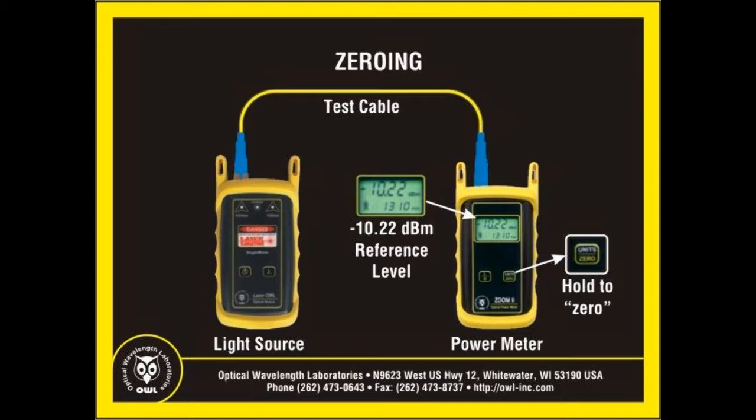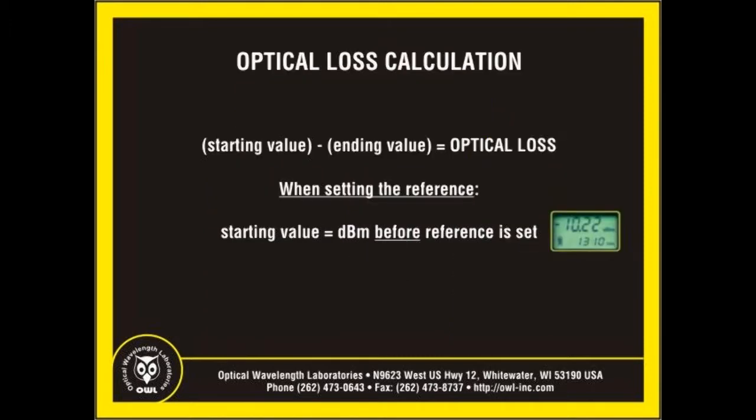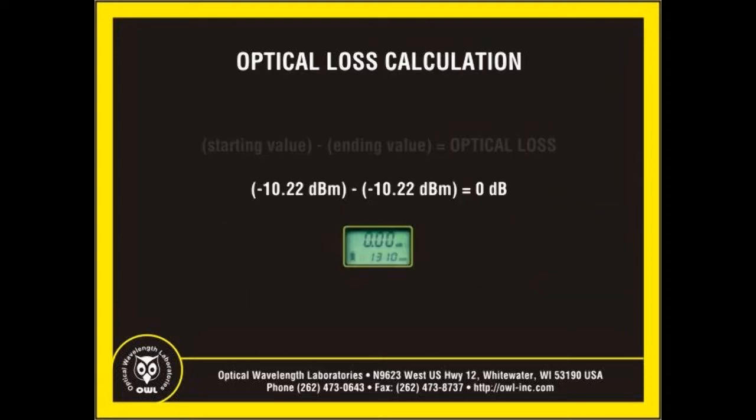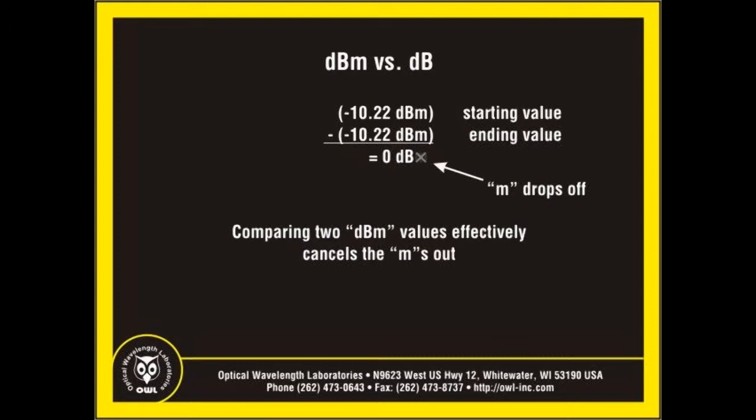Up until now, we have been dealing with optical power measurement, which is a measure of the actual brightness of a source. Carrying this concept over to optical loss measurement — which is the difference between two brightness measurements — the starting value is the output power of the test light source as measured through reference cables, and the ending value is the power measured through the link under test. Most optical power meters have a button or process by which the reference level is recorded internally. Comparing the reference level to itself results in a measurement of zero dB, which is the same as saying the power meter has been zeroed. Notice that the M has dropped off — you are no longer interested in the actual brightness of the source, but in the difference between values. When comparing two separate dBm values, the M drops off and you are left with a measurement unit called dB.